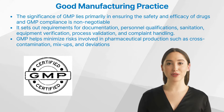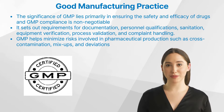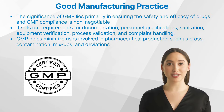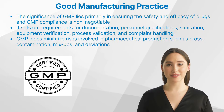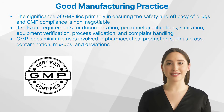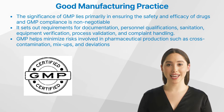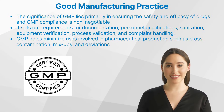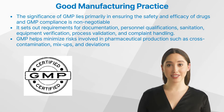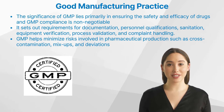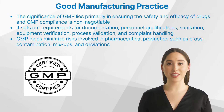GMP impacts quality control by defining the parameters within which pharmaceutical products must be manufactured. It also sets out requirements for documentation, personnel qualifications, sanitation, equipment verification, process validation, and complaint handling. Furthermore, GMP helps minimize risks involved in pharmaceutical production, such as cross-contamination, mix-ups, and deviations that can compromise the quality of the product.